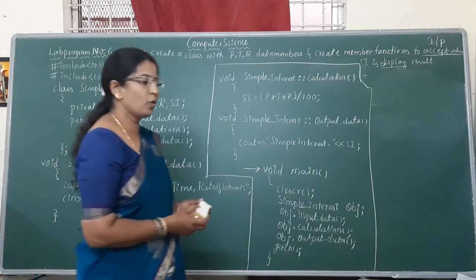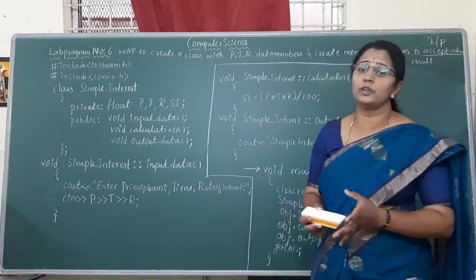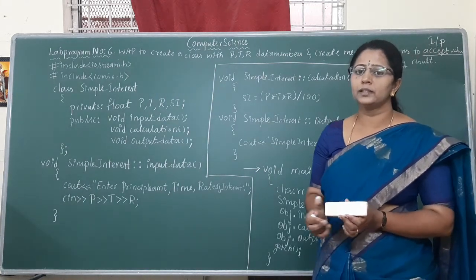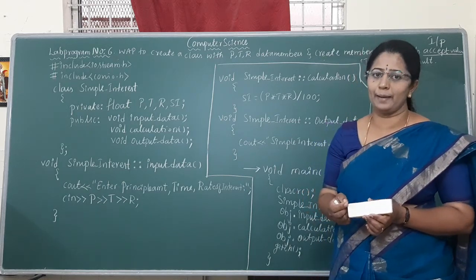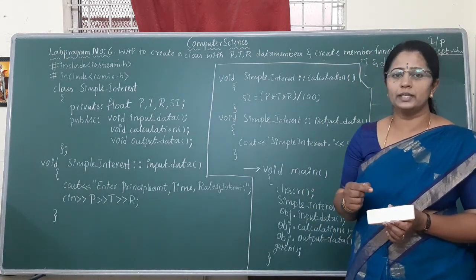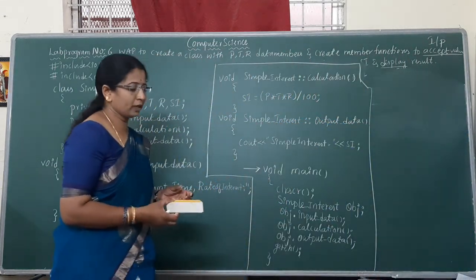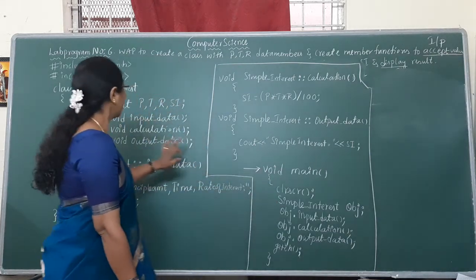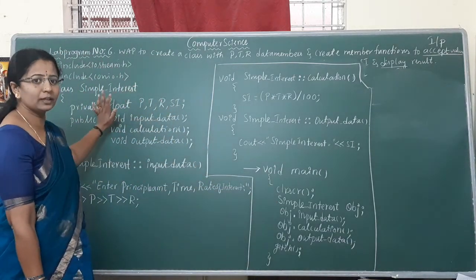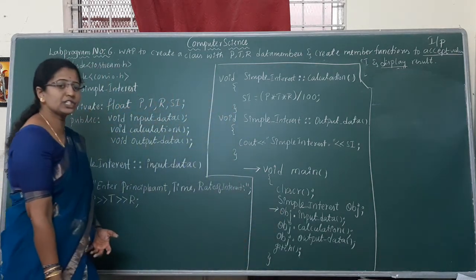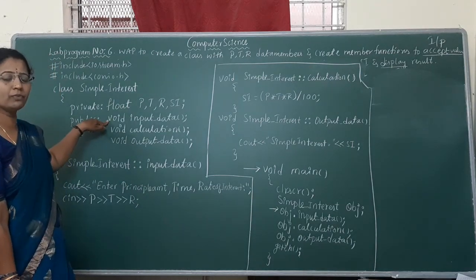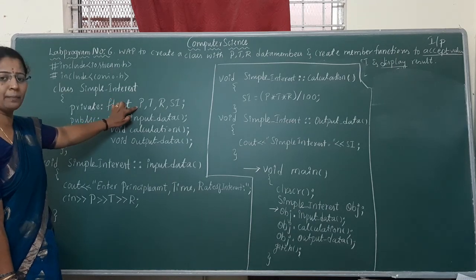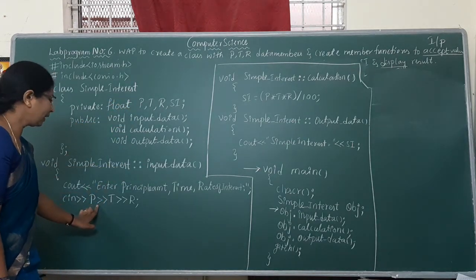This is your first lab program and it is the easiest one. The cursor will come to the main function, then it will create the object. Once the object is created, memory will be allocated for this particular class. Then control will invoke the input_data function — control comes here, finds the declaration and moves to the definition. With the help of the class name it links the data members to the member function, so it will accept the values.